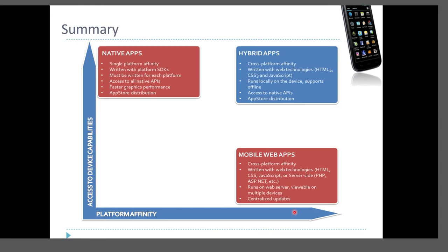For example, a simple application for calculating zakat or reporting damage by taking a photo — such simple applications are sufficient as mobile web applications. Somewhere in between is the hybrid application, which has cross-platform affinity, is written in web technology languages, and also has access to native APIs. However, some developers do not prefer hybrid applications because they are sometimes considered slower than native applications, and certain APIs may not be compatible across platforms — for example, the fingerprint API works differently on iOS compared to Android.